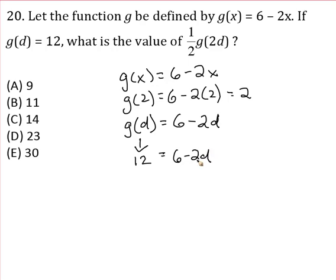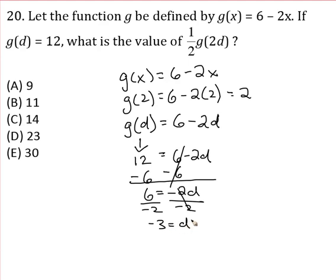And we've got six minus two d. So now we can just solve this equation. I'm going to actually minus the six from both sides, minus the six. That crosses out. We get six equals negative two d.